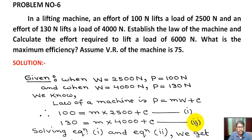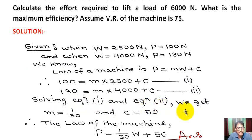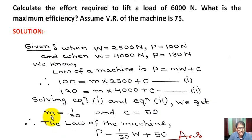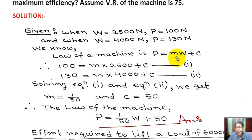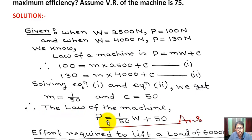Solving these two equations, we get m equals 1/50 and C equals 50. So the value of m, the coefficient of friction, is 1/50, and C, the machine friction constant, is 50. Therefore, the law of the machine is: P equals (1/50)W plus 50. This is the answer.